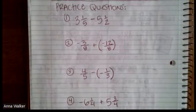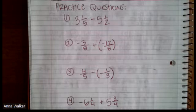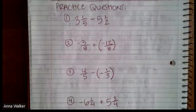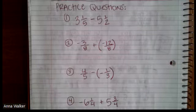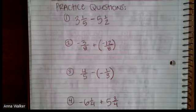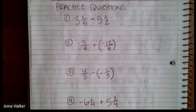All right. So your practice questions today are doing three and one-fifth minus five and a half, negative three-eighths plus negative twelve-eighths. Four over five minus negative one-third. And then the final question, negative six and one-fourth plus five and three-fourths. Do not forget to convert your mixed numbers. Do not forget to follow your integer rules.